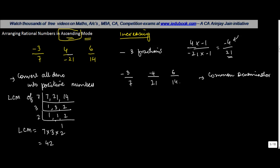Now once you have got 42, you have to convert each of these fractions into fractions with a denominator of 42. To get from 7 to 42, you multiply 7 by 6. Since you are multiplying 7 by 6, to ensure this is an equivalent fraction, you also multiply minus 3 by 6.